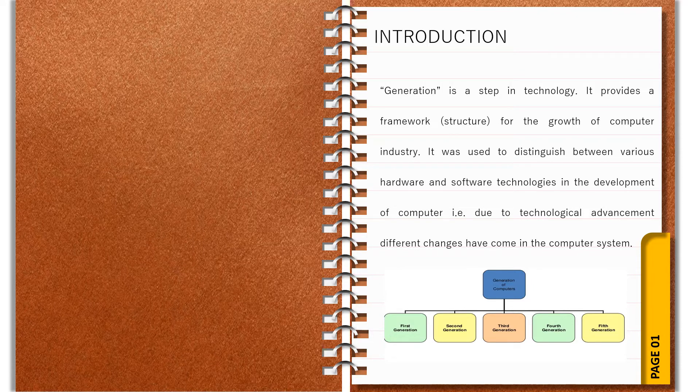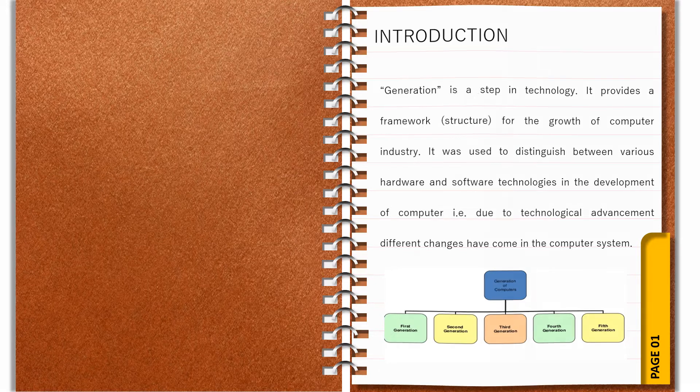The five generations are: first generation, second generation, third generation, fourth generation, and fifth generation.